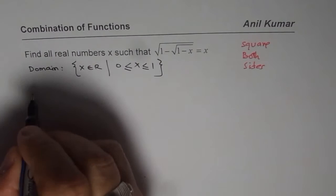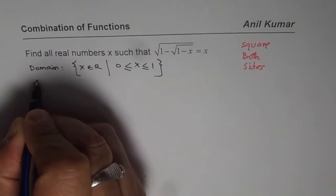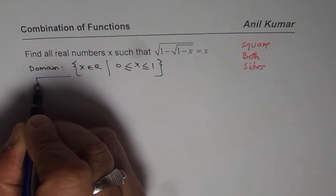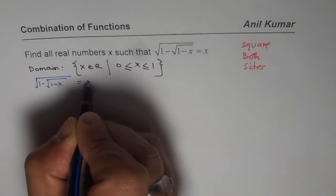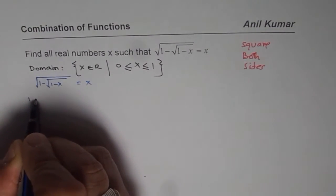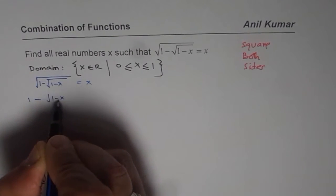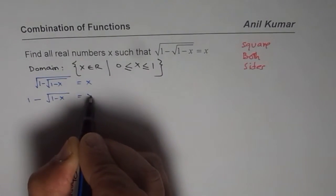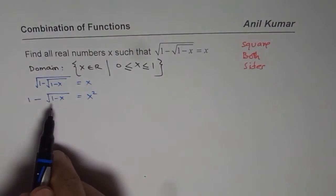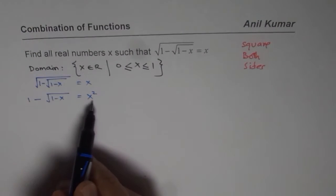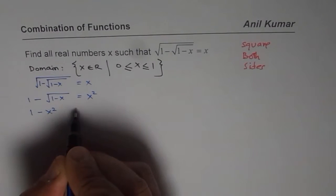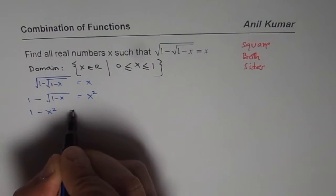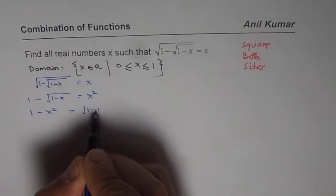Let us square both sides. Let me first copy the question: square root of 1 minus square root of 1 minus x equals x. When I square both sides, I get 1 minus square root of 1 minus x equals x squared. I still have a radical.